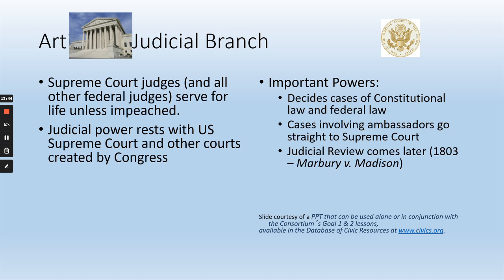Some of the important powers of the judicial branch: they decide cases of constitutional law or federal law. Interestingly, cases involving other countries' ambassadors go straight to the Supreme Court — an ambassador being a country's official representative to another country. And then the most important role: judicial review — the power to rule laws constitutional or unconstitutional. Interestingly, that power is also not in the Constitution; the Supreme Court basically gave that power to itself in 1803 in a case called Marbury v. Madison.